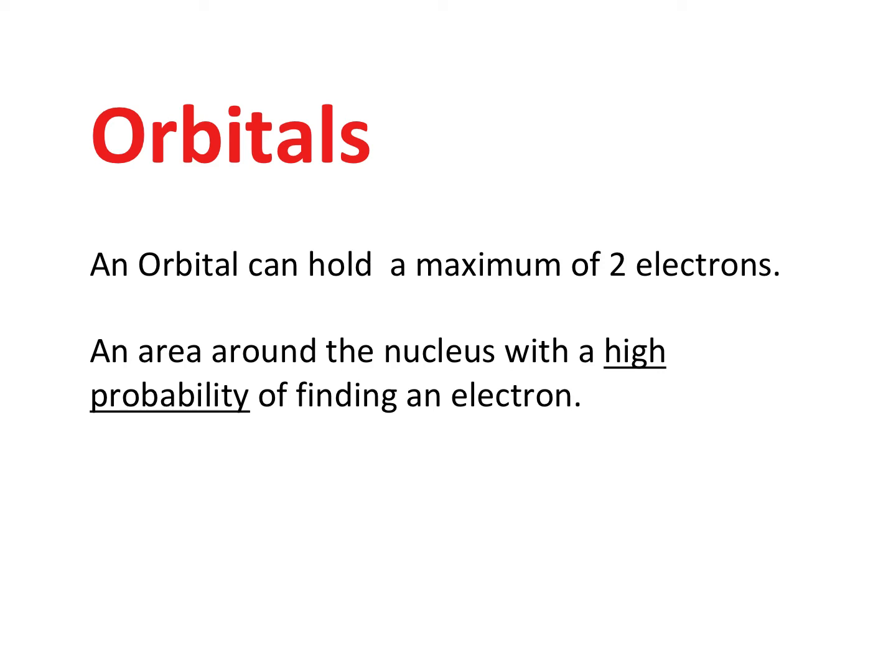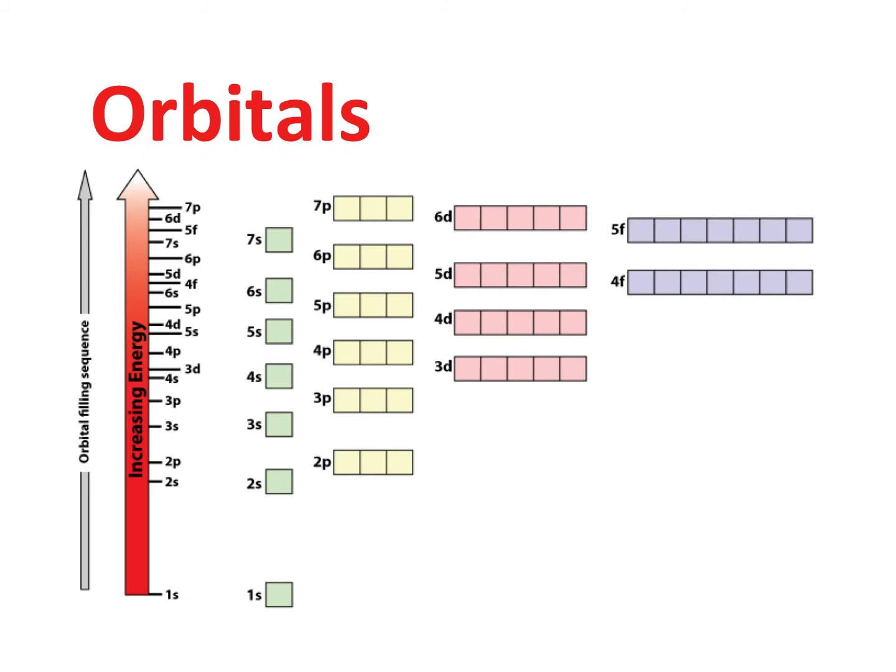Just to remind you: an orbital is an area around the nucleus where you have a high probability of finding an electron, and an orbital can hold a maximum of two electrons. In this diagram, all the greens are S sublevels, yellows are P sublevels, reds are D sublevels, and purples are F sublevels. Every S sublevel has one orbital, every P sublevel has three orbitals, a D sublevel has five orbitals, and F sublevels have seven orbitals.